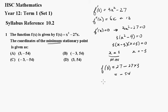So the coordinates of the minimum stationary point are (3, -54), which of course is a.